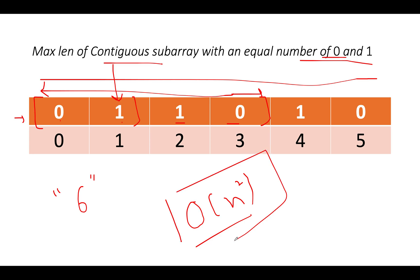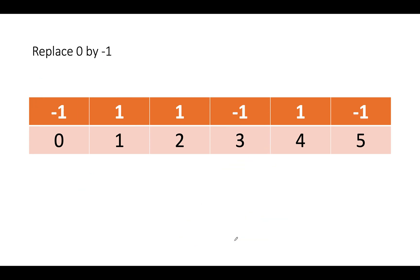Here is the key insight: in the first step, I'm going to replace all 0s with -1. So hypothetically, my updated array becomes [-1, 1, 1, -1, 1, -1]. I'll tell you why I'm doing this in the next section, so stay tuned.